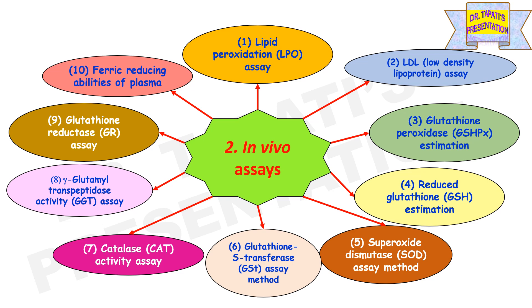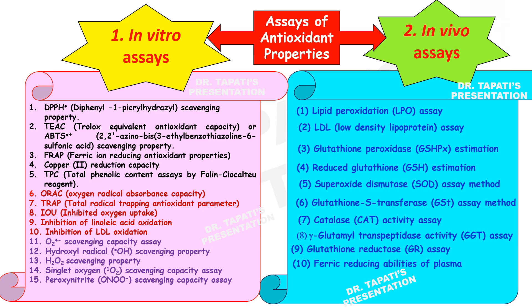To perform in vivo assays, samples to be tested for antioxidant properties are usually administered to test animals such as mice or rats at definite doses. After a specific period of time, the animals are sacrificed and blood or tissues are used for the assays. Among all in vitro assays, DPPH radical scavenging property is most popular because it is rapid, simple, and inexpensive. ABTS radical cation scavenging property is applicable for both hydrophilic and lipophilic antioxidants. Among in vivo assay methods, lipid peroxidation assay is most popular.